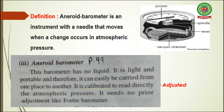An aneroid barometer is an instrument with a needle that moves when a change occurs in atmospheric pressure. Here you can see a diagram of the aneroid barometer. This is the pointer which moves clockwise or anti-clockwise. If the pressure increases, this needle moves towards the right side, and when pressure decreases, the needle moves towards the left side.